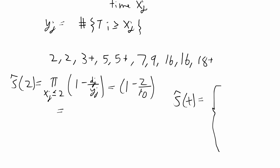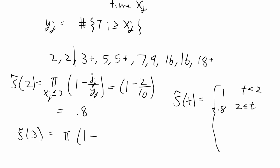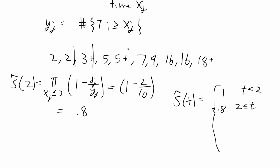The estimated survival function before time 2 (t < 2) equals 1, since no events have occurred. When t ≥ 2, the estimated curve equals 0.8. At time 3 the observation is censored — no deaths or events occur there, so the factor would be 1 minus 0 = 1, meaning it doesn't change the estimate. We only estimate the survival curve at actual event times, not at censored-only observations. So we move past 3 and go to 5.